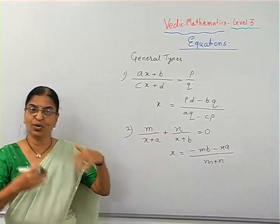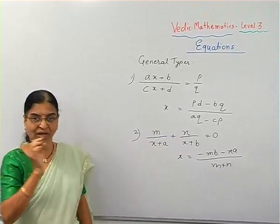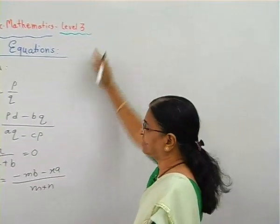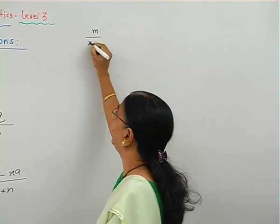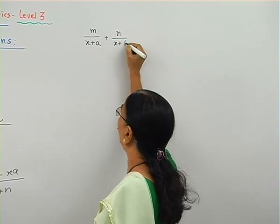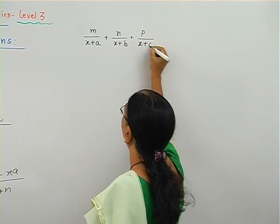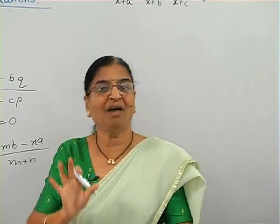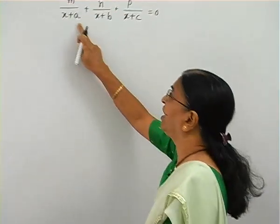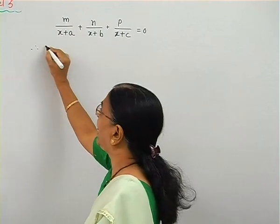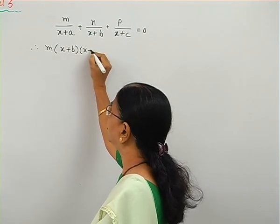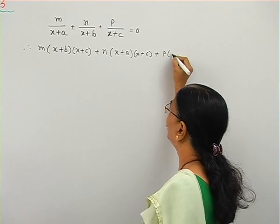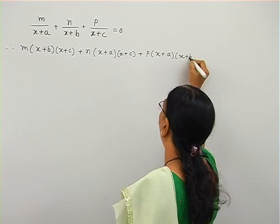We can extend this type of equation to any number of terms. Now let me extend to three terms: M upon (X plus A), plus N upon (X plus B), plus P upon (X plus C), equal to zero. As generally learned, we take the LCM, then multiply M by (X plus B)(X plus C), N by (X plus A)(X plus C), and P by (X plus A)(X plus B), and it equals zero.